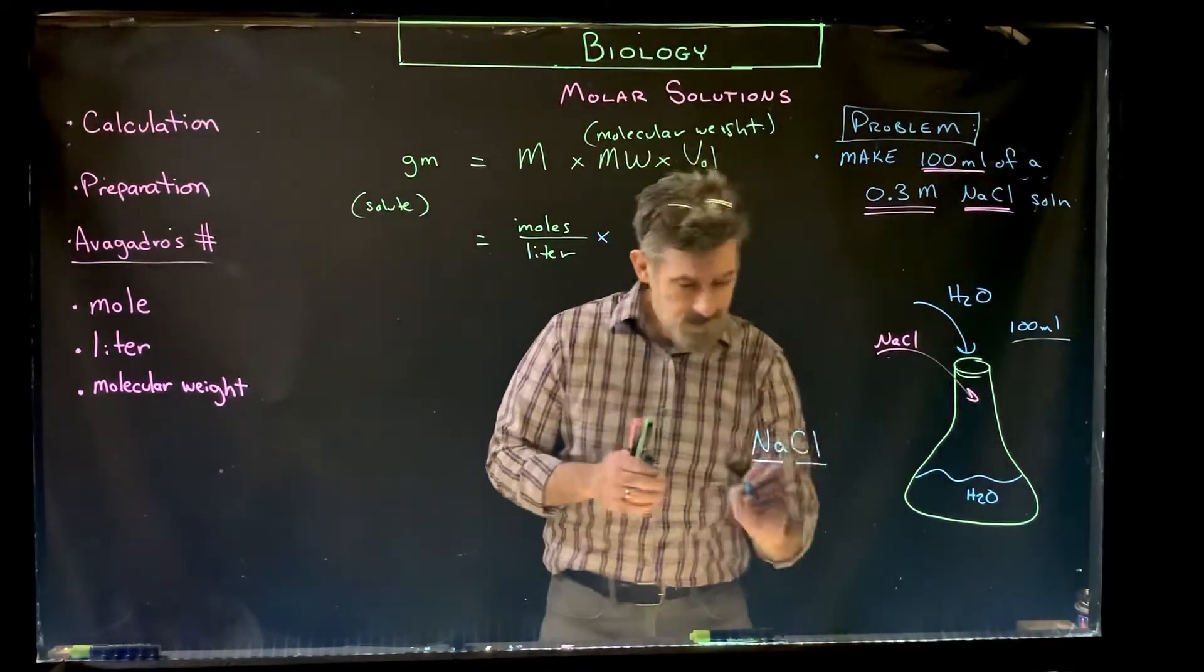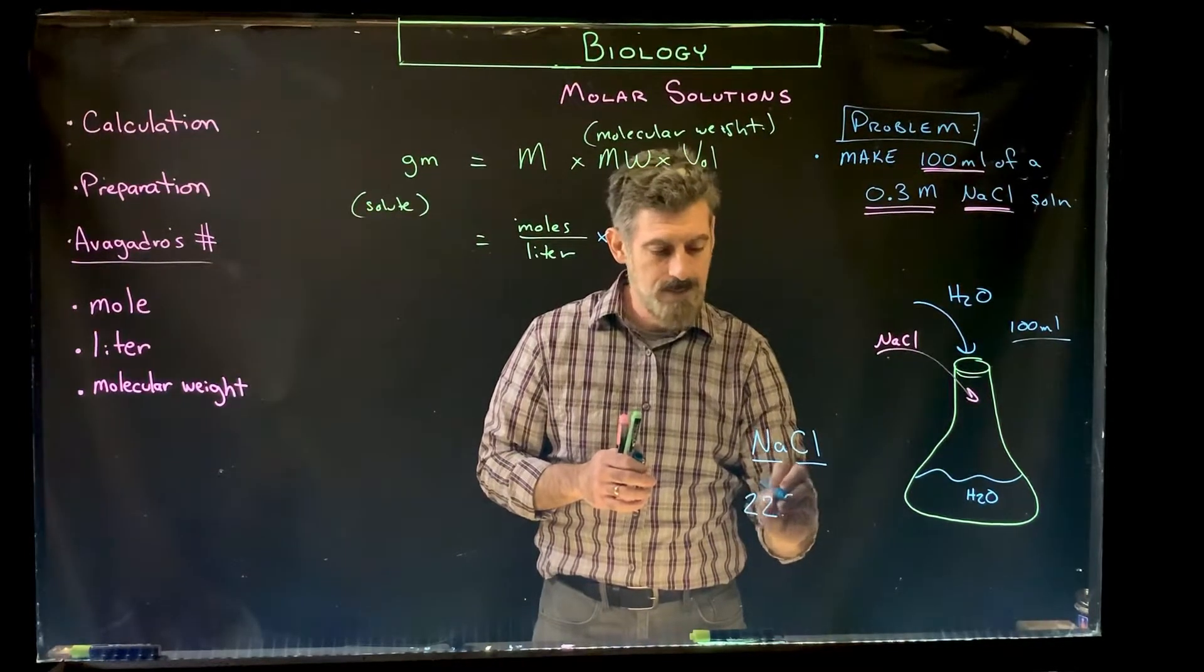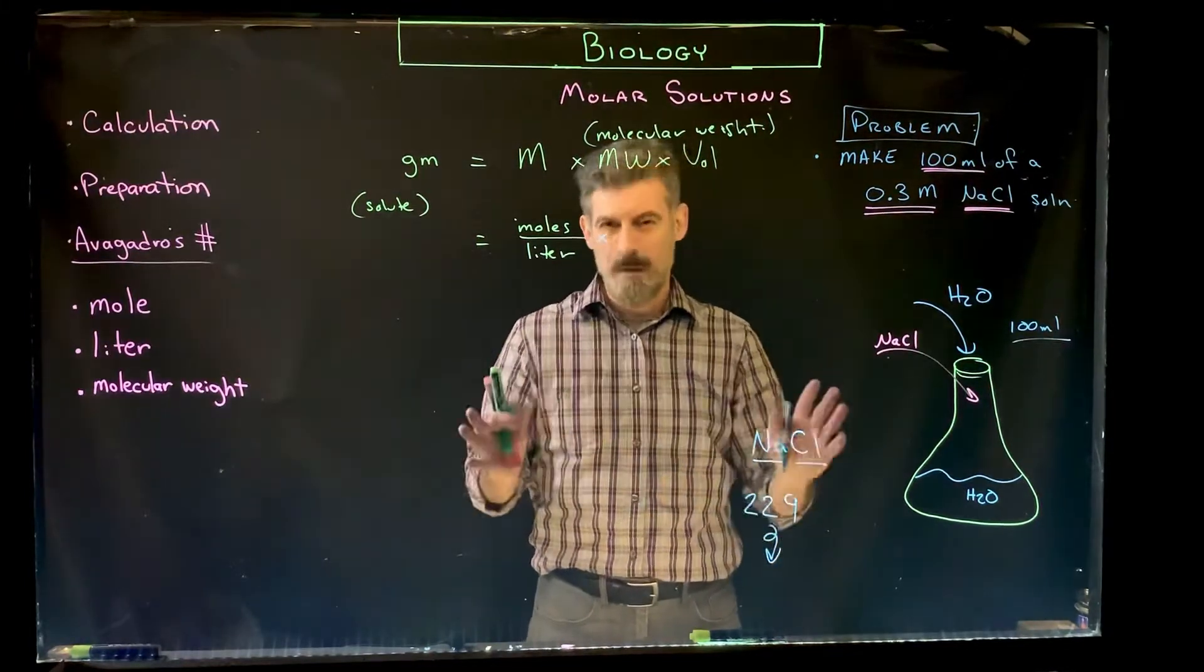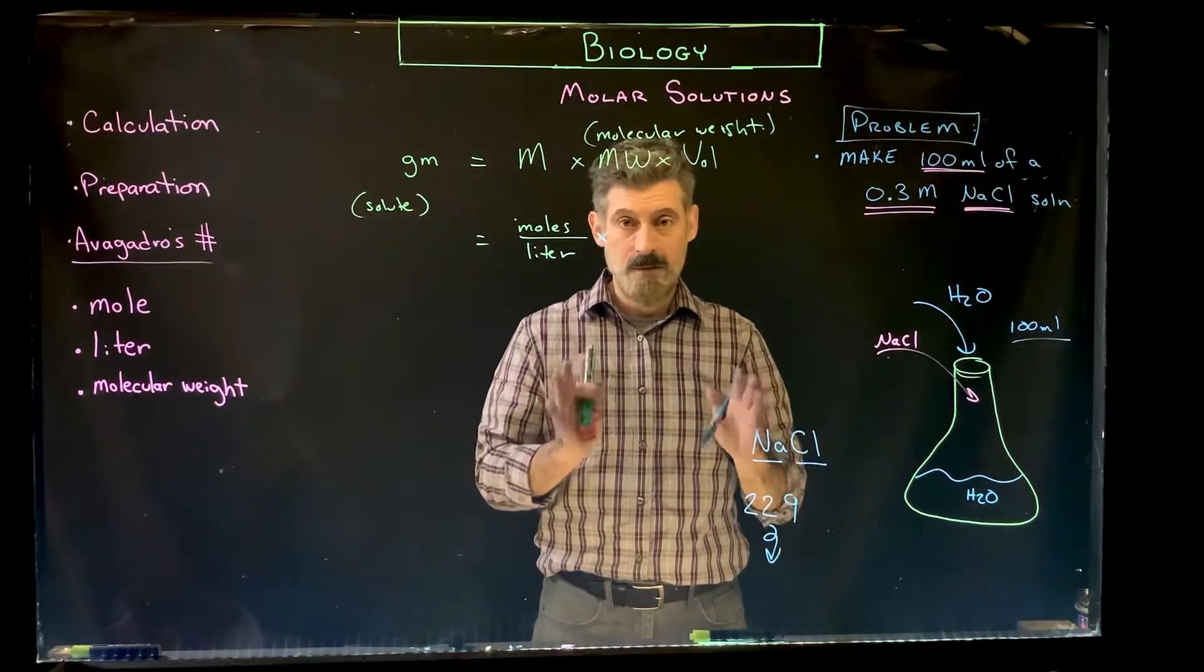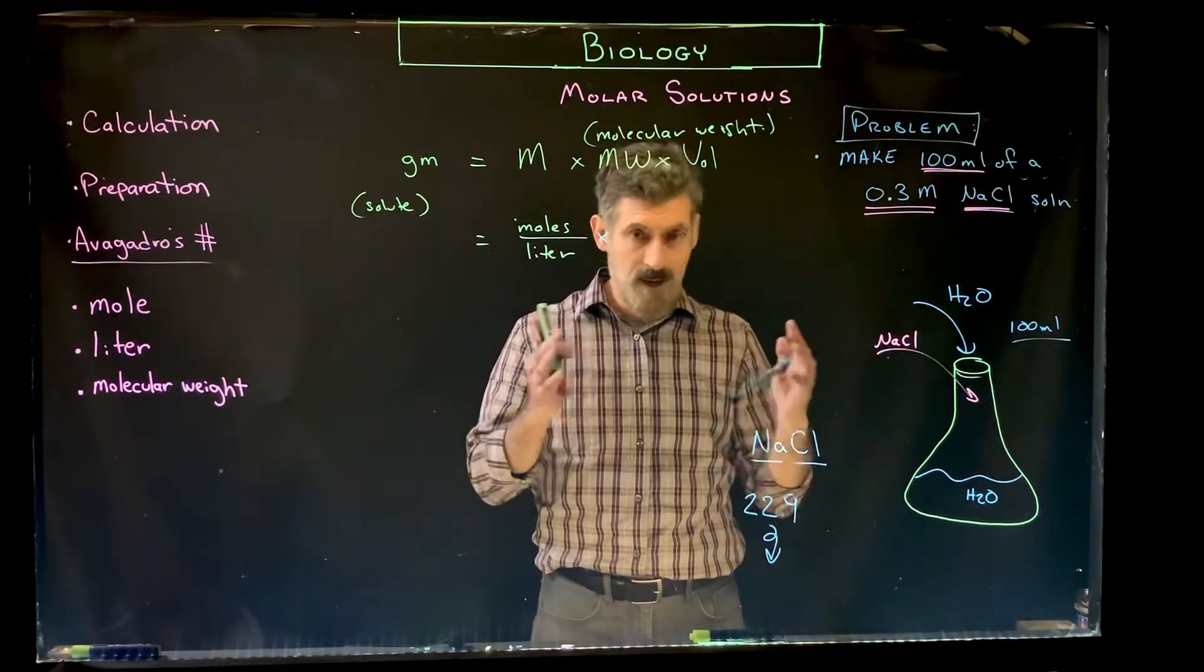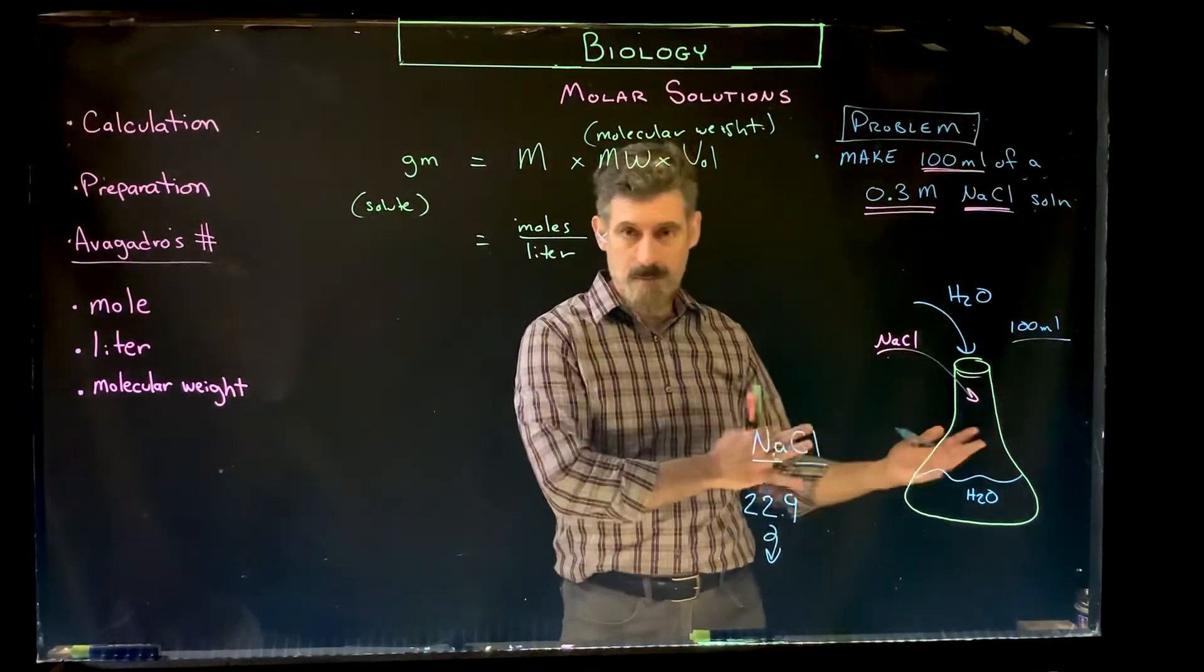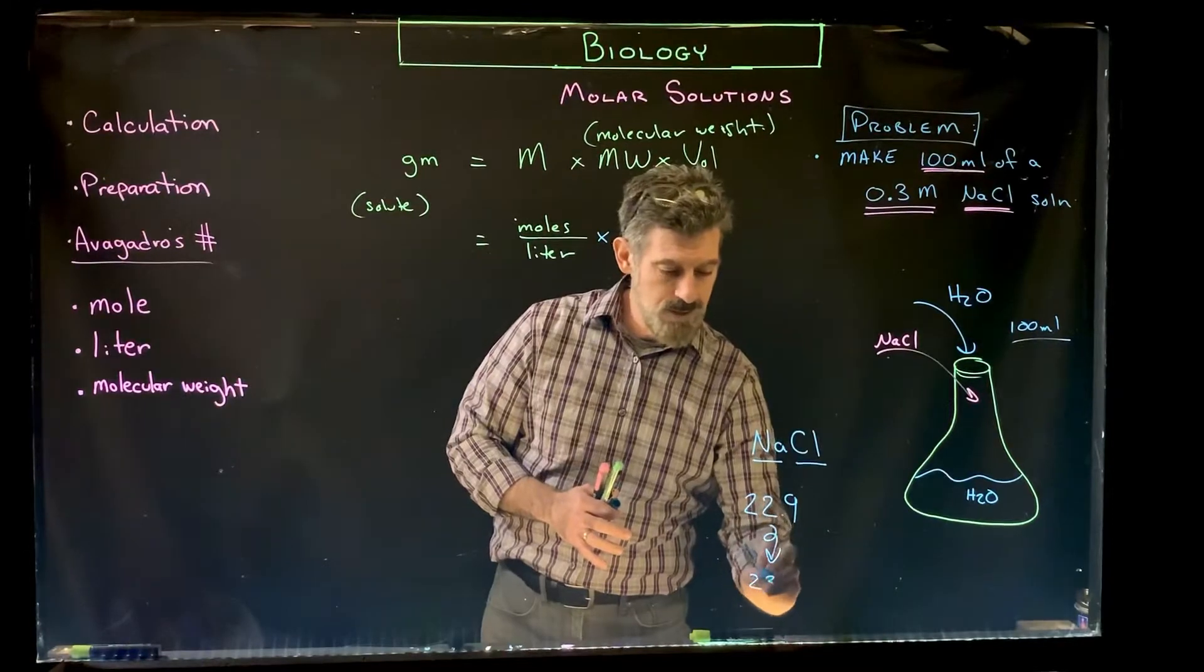So for sodium, you would look this up, it'd be 22.98. We can round this for our purposes. Again, in a chemistry class, this is - I'm not teaching this for specifically a chemistry class. It's more for a biology lab where you're preparing a solution to use in some sort of experiment. We could just round this here. 23.